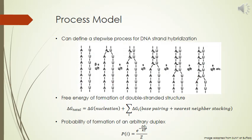To develop a process model for DNA self-assembly, we can consider what happens when two single-stranded DNA molecules hybridize to form a double-stranded DNA molecule. We can define a stepwise process for this type of hybridization as shown. Here, each step involves the formation of a bond between exactly one pair of nitrogen bases.